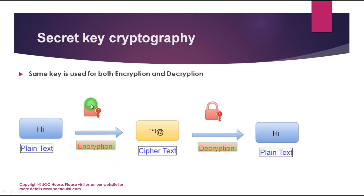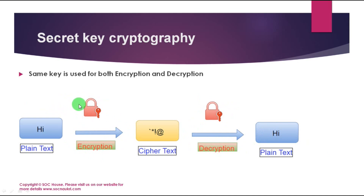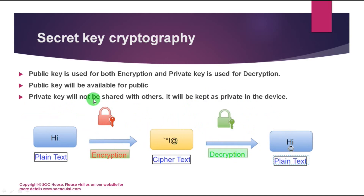Secret key cryptography is also known as symmetric encryption. In this cryptography, the source and destination use the same key for encryption and decryption. The same key is used by both the source and the destination for encrypting and decrypting the data.